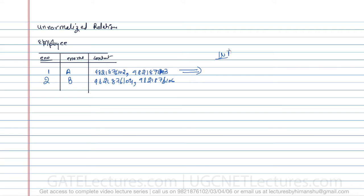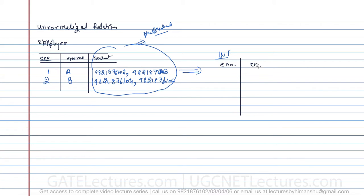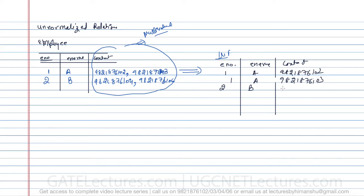To convert this relation into 1NF we have to remove all multi-valued attributes. Here, contact is a multi-valued attribute. We also have to remove all composite attributes. To bring the table into 1NF, we expand it so each row has a single contact value: employee 1 / A / 9821876102, employee 1 / A / 9821876103, employee 2 / B / 9821876104, employee 2 / B / 9821876106. However, the relation still has a lot of redundant values.